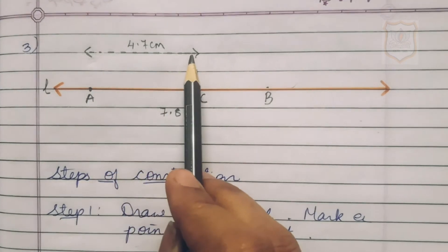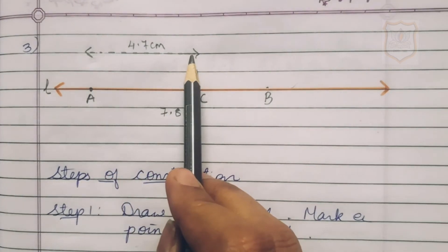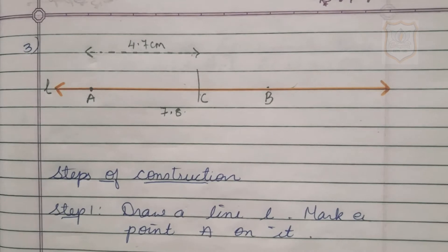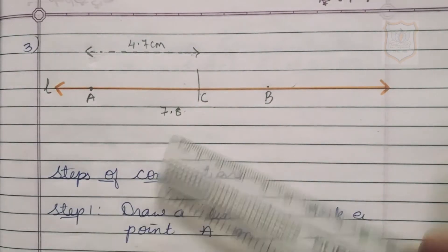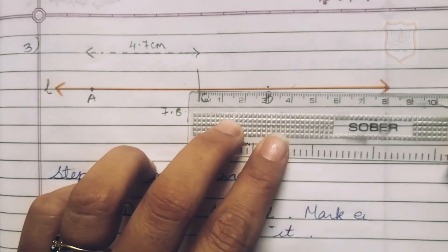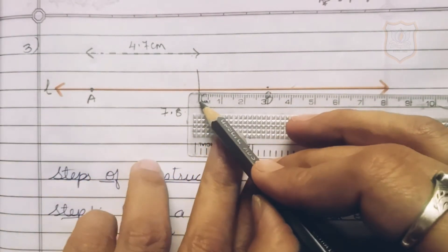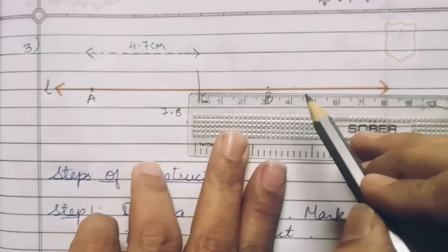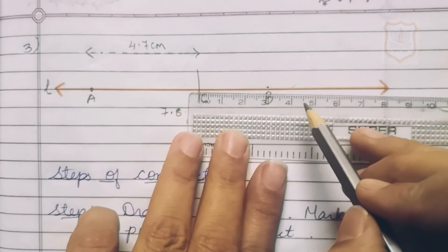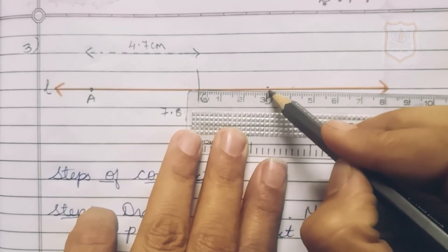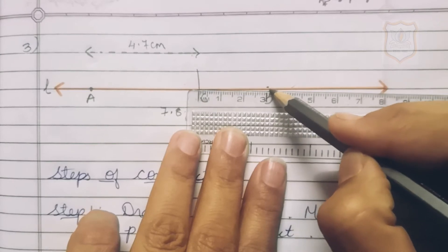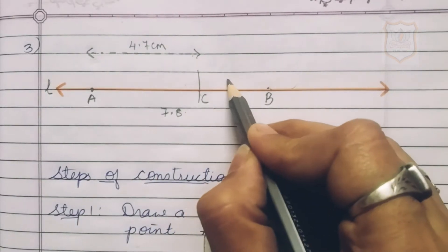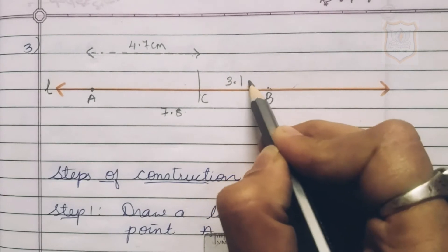Now we have to find the measurement of line segment BC. We measure BC with the scale by placing 0 centimeter at point C. Point B falls at 3.1 centimeter — that is 3 and 3.1. Therefore, the measurement of line segment BC is 3.1 centimeter.